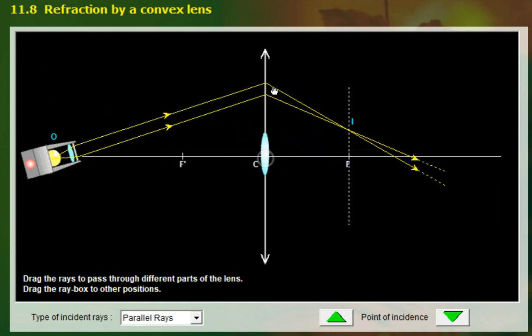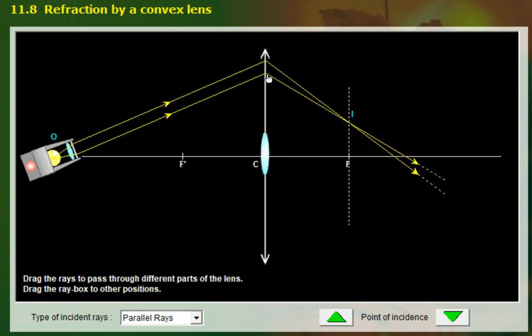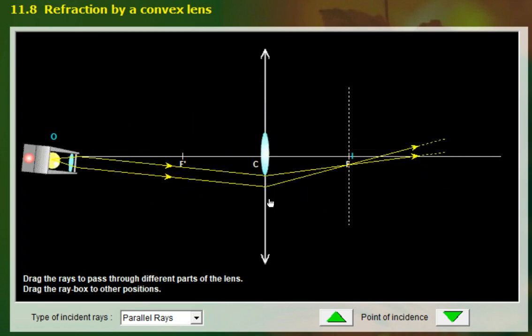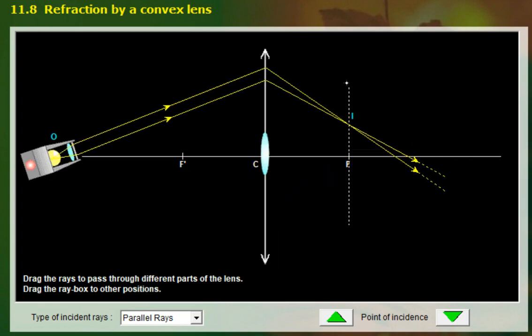So another situation is what if the parallel beam of light hits other parts of the lens? It will still converge to a point along the focal plane, and this distance will still be the focal length of the lens.